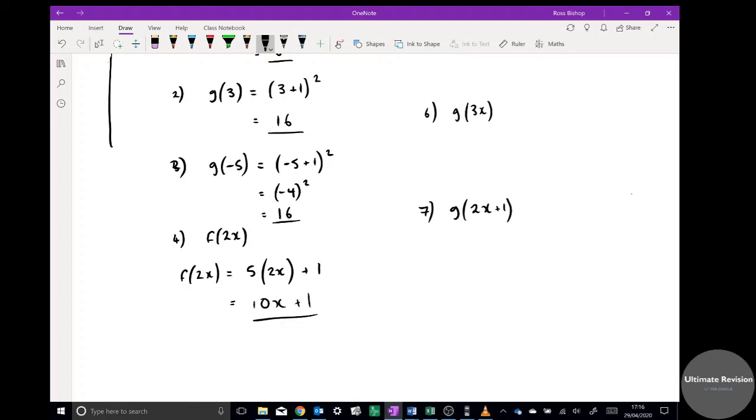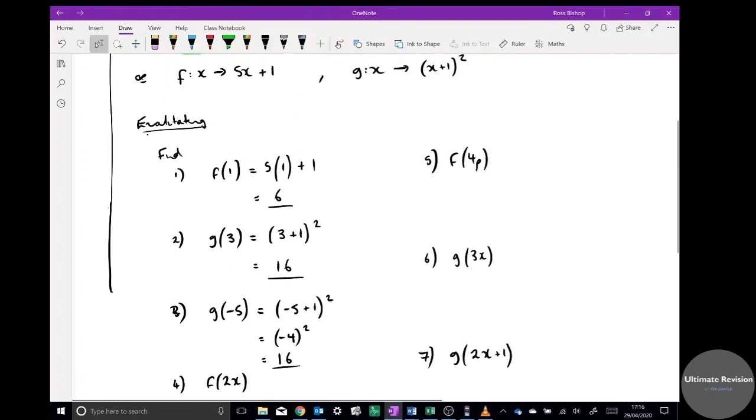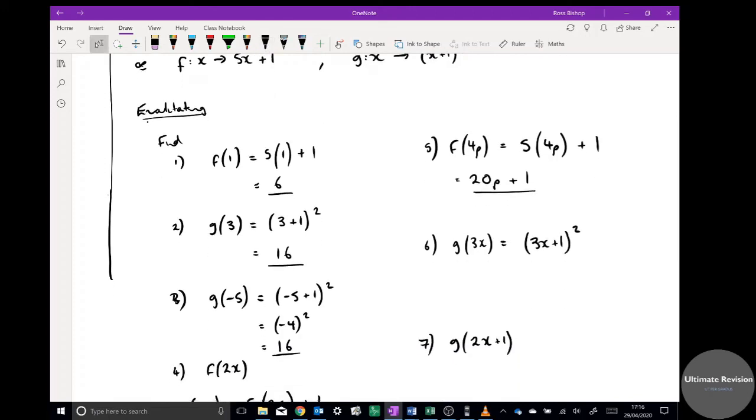So that's going to equal 10x plus 1. That's what f(2x) is, so sometimes it's in terms of algebra. Right, here we go, question five again: f(4p). Do the same, I always take x out but put 4p in its replacement. That's going to be 5(4p) plus 1. Times that together I get 20p plus 1. That would be the answer to that one. g(3x): again you might want to have a go at this one. Take x out, put 3x instead, so it's (3x+1) squared.